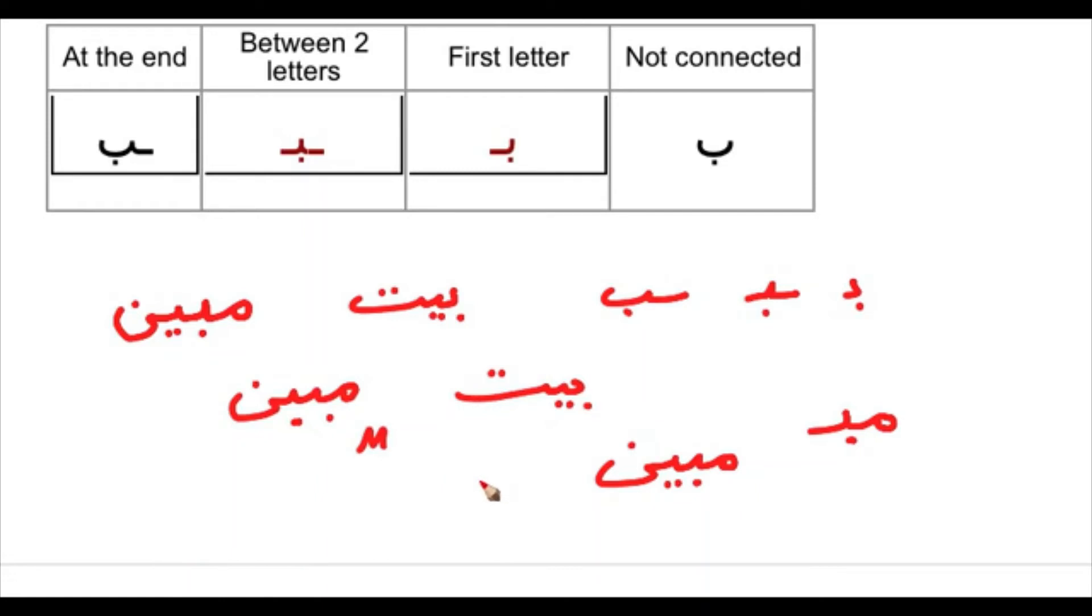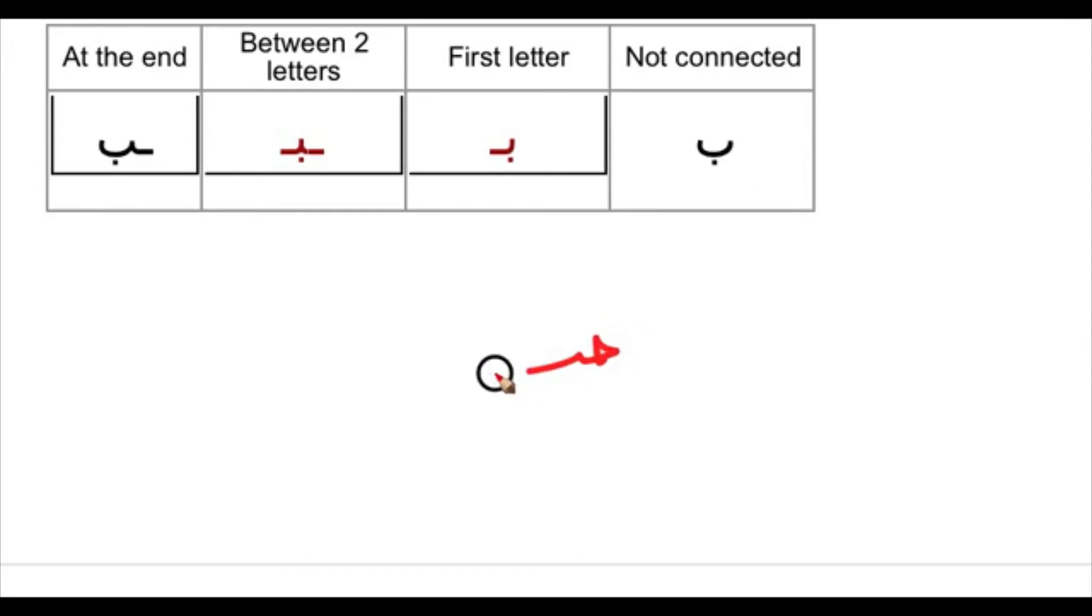What about the letter BA at the end? We can say, let us clean the screen. HUB. HUB means love. This is letter HA by itself, later we will take it. And when it's connected, it looks like this.